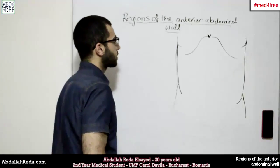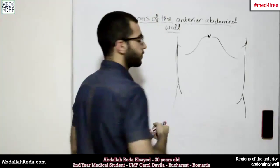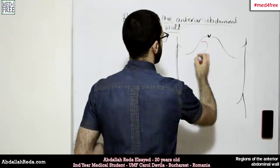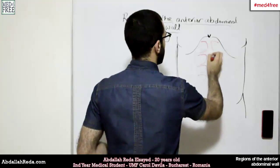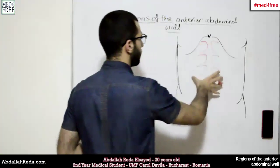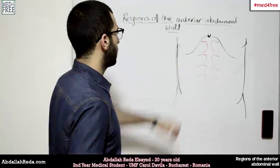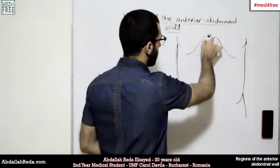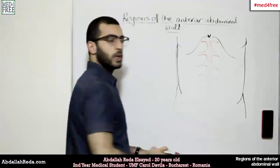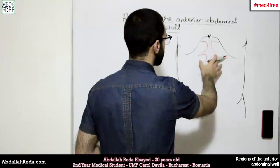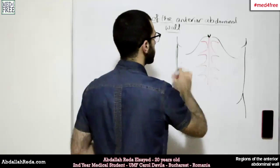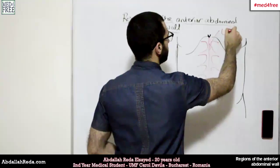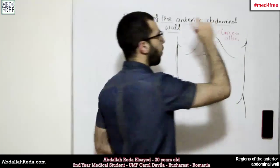The most important muscle in this aspect is the rectus abdominis. The rectus abdominis is the muscle found in the midline of the anterior abdominal wall. This is the muscle involved in the six-pack and so on. The line that connects between the two parts of the muscle bilaterally is called the linea alba, or the white line.